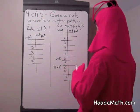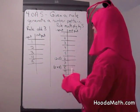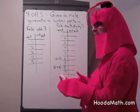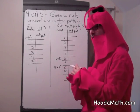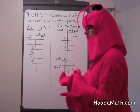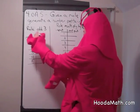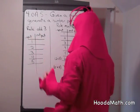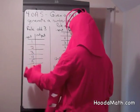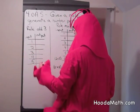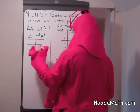Given a rule, generate a number pattern. We're going to see if there's a pattern that occurs when we do this. Our rule is — first rule — is to add 3. So we have our input 1 to 5, and let's see what our output is.